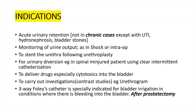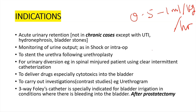When resuscitating a patient in shock or intra-operatively, you monitor urine output. Normal urine output is 0.5 to 1 mL per kg per hour for adults, or 1 to 2 mL per kg per hour in the pediatric age group. Urethral catheter can also be used to stent the urethra following urethroplasty, and for urinary diversion — for example, in spinal-injured patients using clean intermittent catheterization.